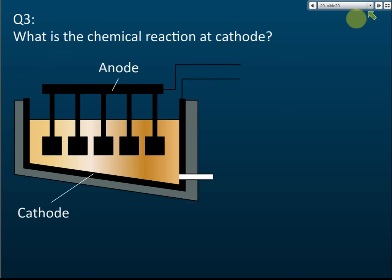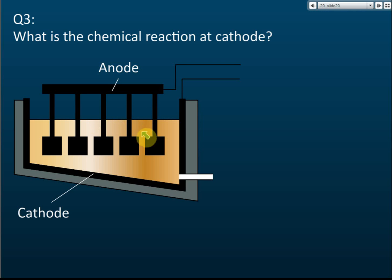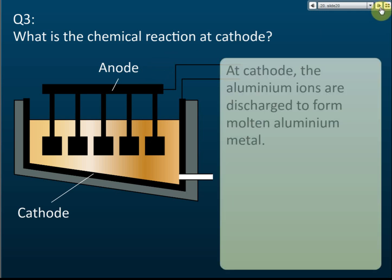So to recap: both the anode and cathode electrodes are graphite. The raw material used is Aluminium Oxide, or Bauxite. We heat Bauxite until it melts, then run electrolysis to separate the Aluminium from the Bauxite.